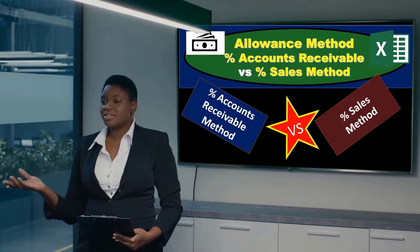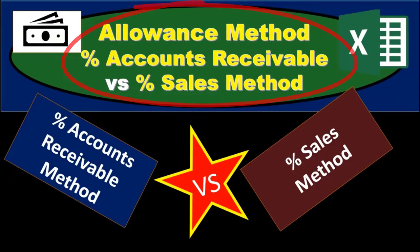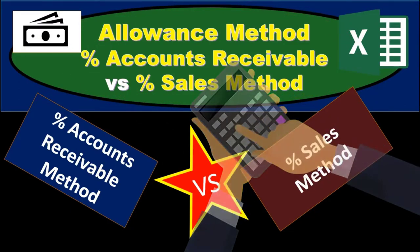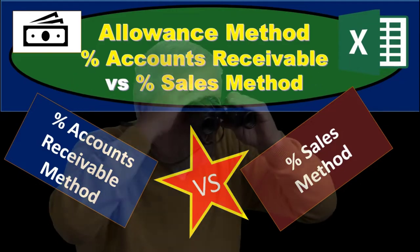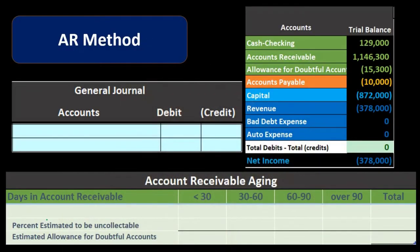In this presentation we will be taking a look at the allowance method for accounts receivable, focusing on the calculation of the allowance for doubtful accounts. There are two methods that can be used: the percentage of accounts receivable and the percentage of sales. We will take a look at both and consider the pros and cons of each.